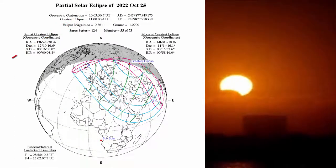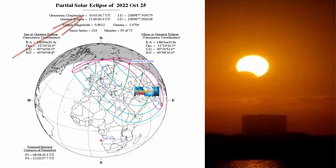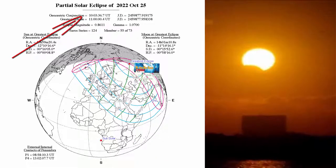Pada tahun 2022, tepatnya tanggal 25 bulan Oktober 2022, akan terjadi fenomena astronomi gerhana matahari sebagian.